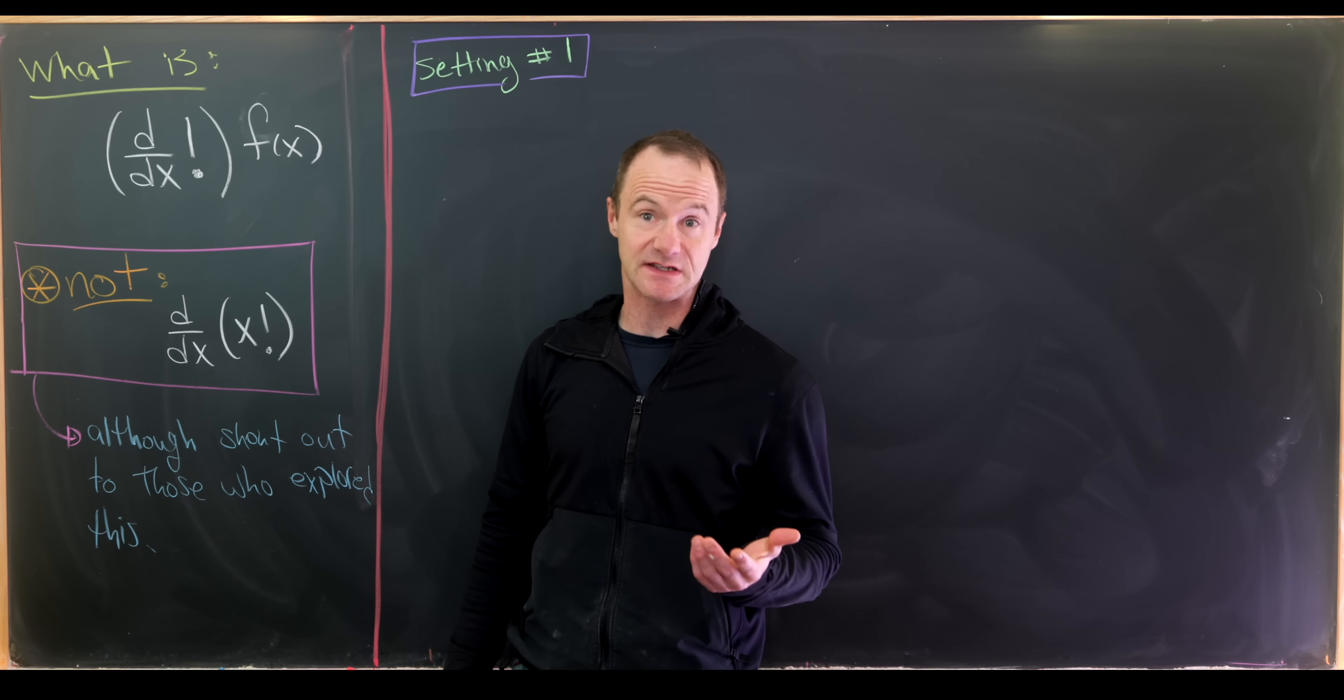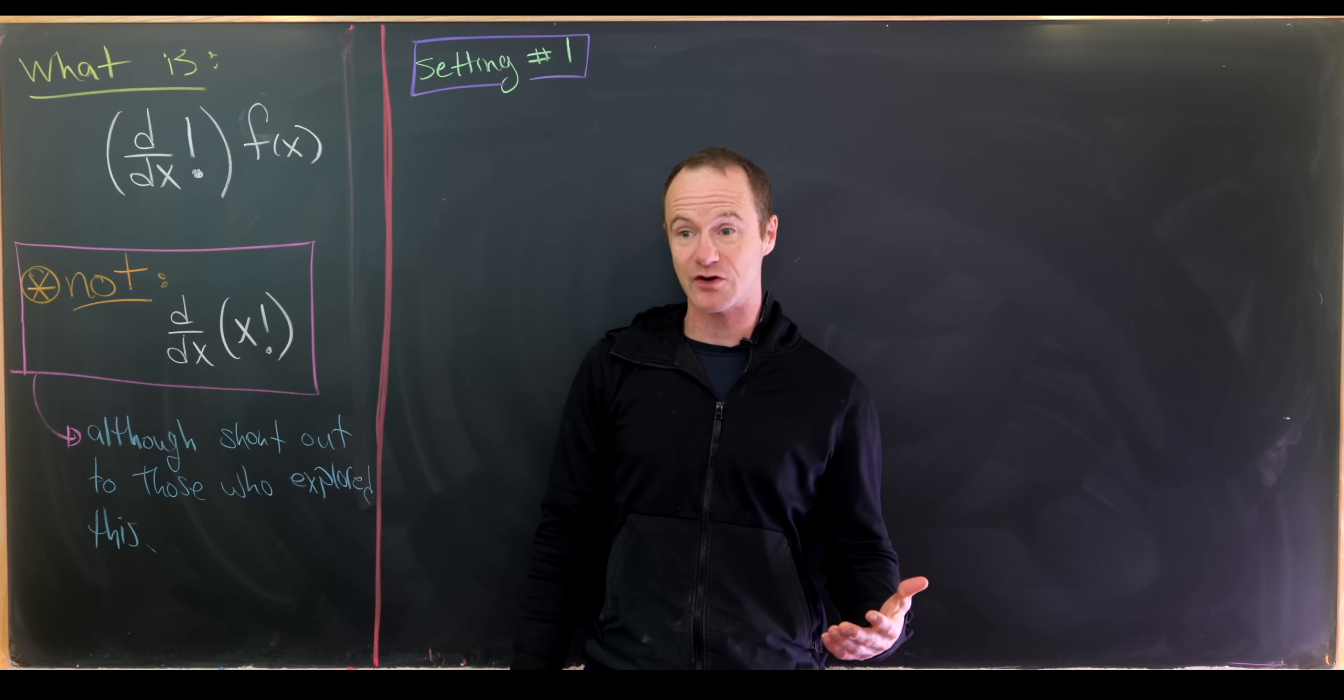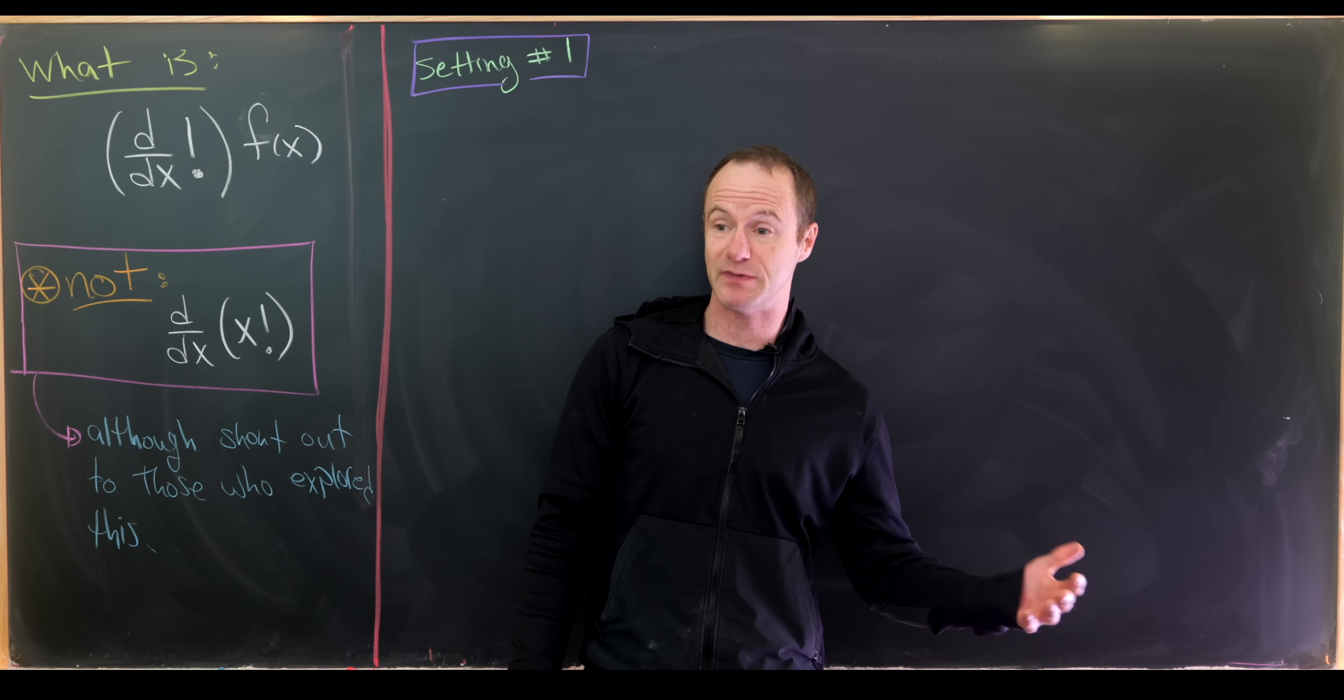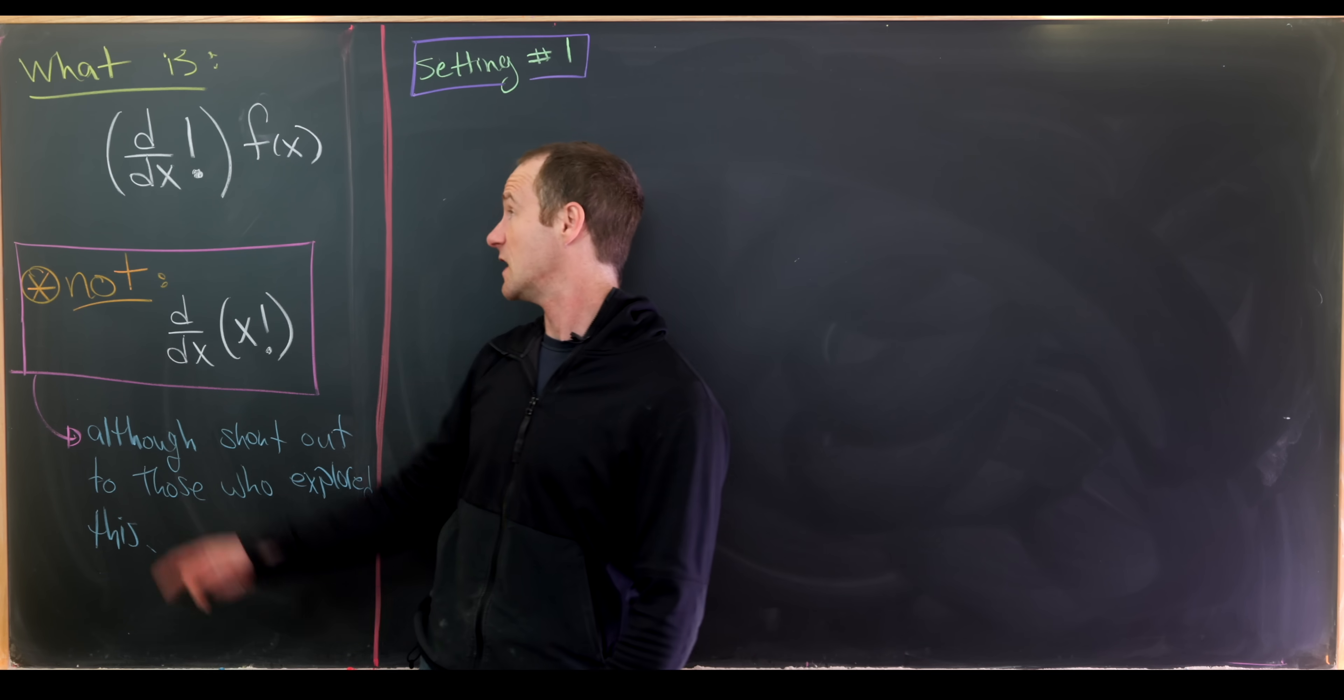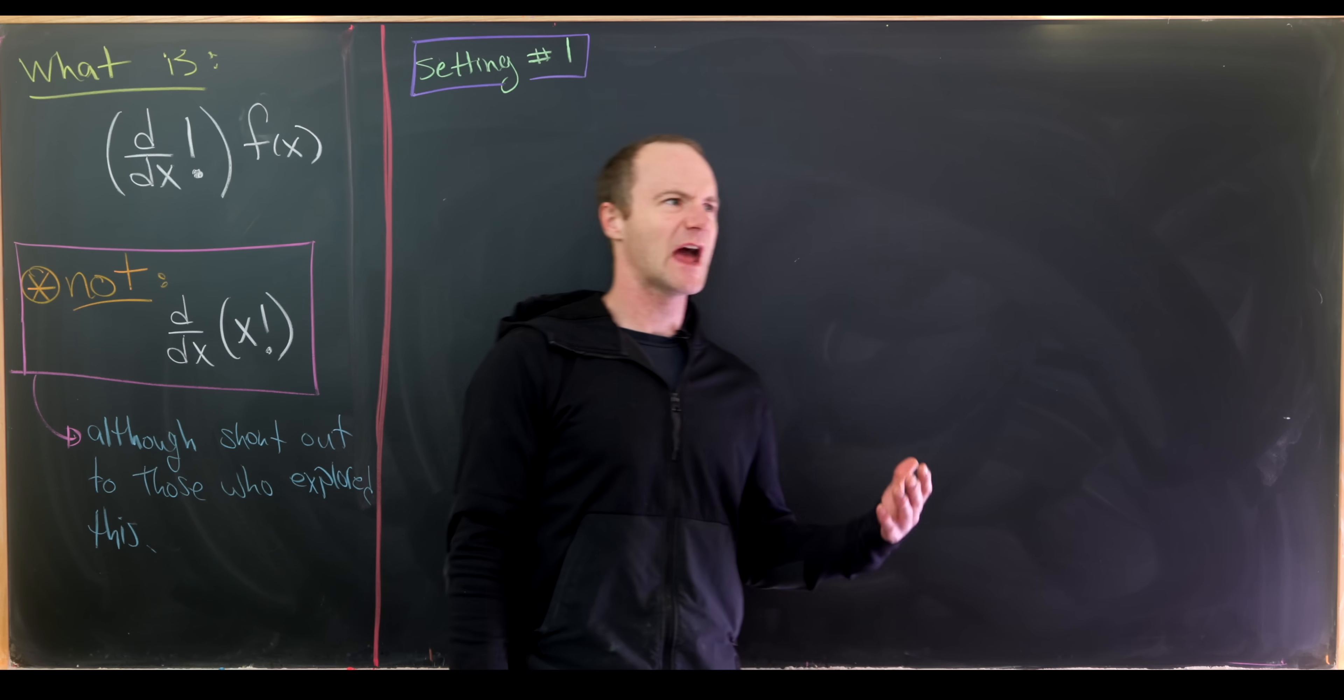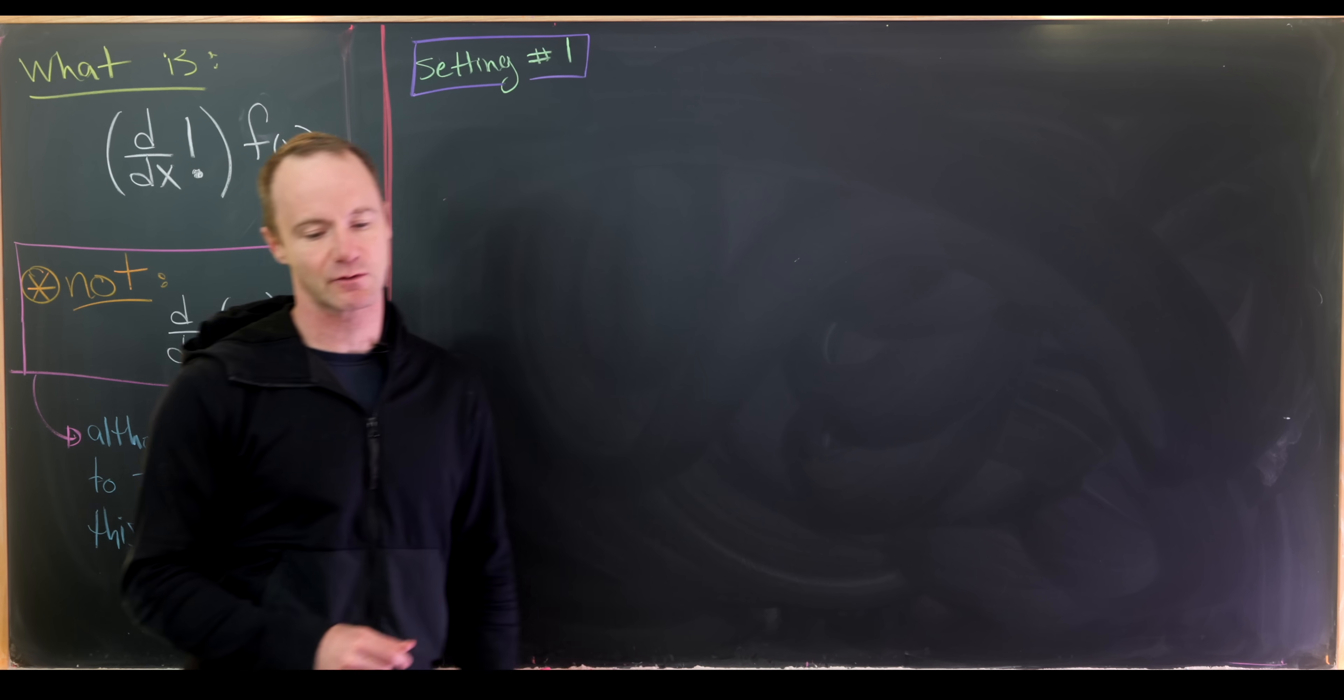I haven't really seen this done anywhere. But my take is that since the derivative is a linear transformation, and we have a standard way of applying functions to linear transformations via diagonalizing them in a certain basis or finding a Jordan form, then we can apply a factorial to the derivative viewed as a linear transformation. But we have to restrict which space we're looking at, and I think we'll get different answers depending on different spaces.